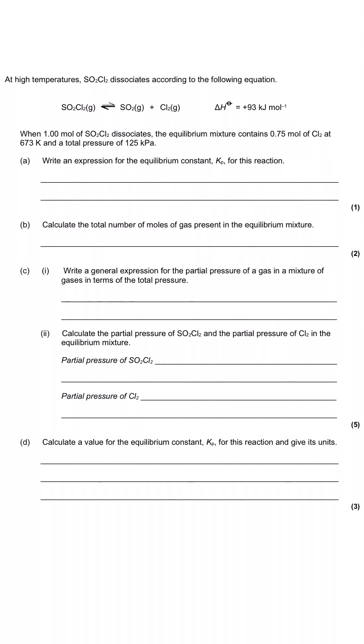In this exam question, we are looking at sulfuryl chloride, SO2Cl2, dissociating according to the equilibrium where the sulfuryl chloride turns into sulfur dioxide and chlorine gas, and the delta H is plus 93 kilojoules per mole, which that positive symbol tells us that it is endothermic, and that will probably be relevant later in a Le Chatelier style situation. We're given some details about one mole of sulfuryl chloride, and the equilibrium mixture contains 0.75 moles of Cl2 at 673 Kelvin, and the total pressure is 125 kilopascals. That's almost always worth noting for a question that looks like it's about to be asking us about KP. And so, it is asking us about KP, because we can see in the very first question, it asks us to write an expression for the equilibrium constant KP.